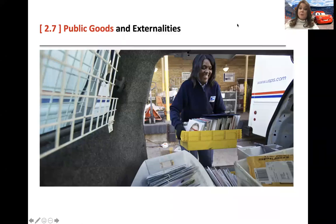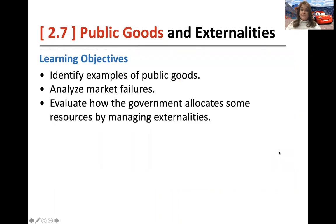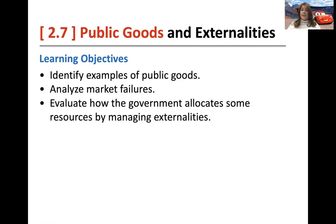Welcome to topic 2.7. Today in economics, we are going to talk about public goods and externalities. When you're done, you should be able to identify examples of public goods, analyze what constitutes a market failure, and evaluate how the government allocates some resources by managing those externalities.